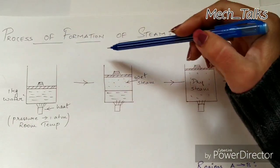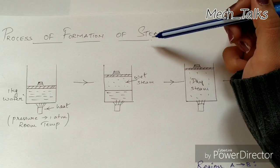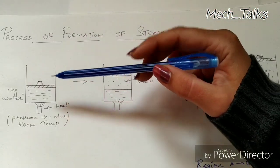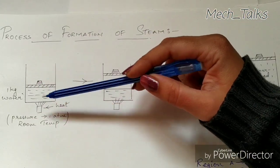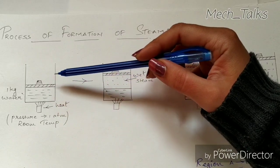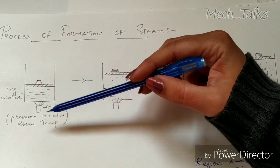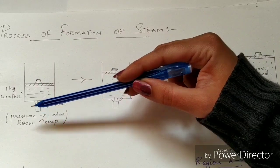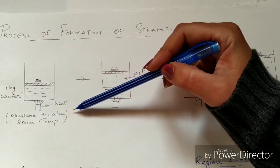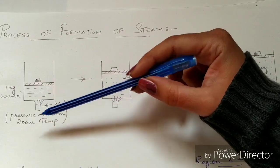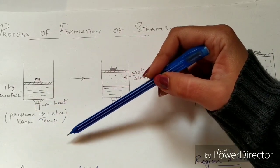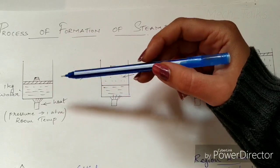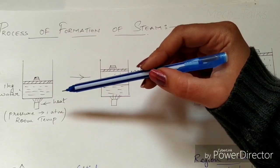Process of formation of steam. As shown in the figure, we have taken 1 kg of water into this piston cylinder arrangement. The initial conditions of water are: pressure is taken as 1 atmospheric pressure and the temperature is taken at room conditions, that is 32 degree centigrade.